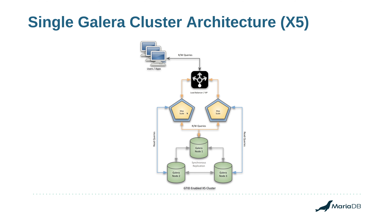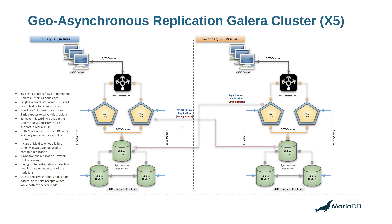Eventually we are going to reproduce the same setup on another data center with a different set of IPs and a different MaxScale IP, and then we are going to be replicating from this MaxScale to one of the Galera nodes on the other side. Similarly, from the MaxScale on the other side we are going to be replicating back to one of these Galera nodes, giving us a two-way replication.